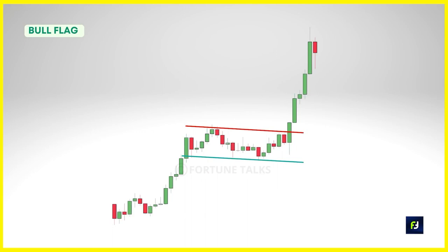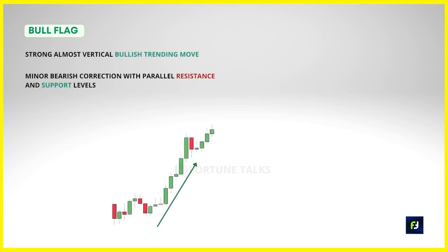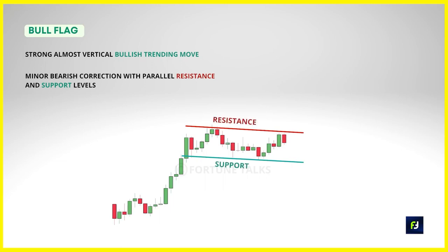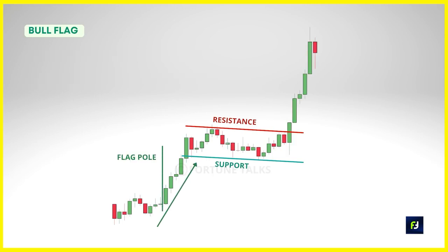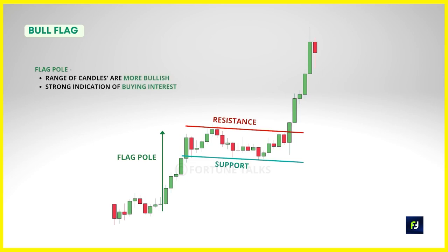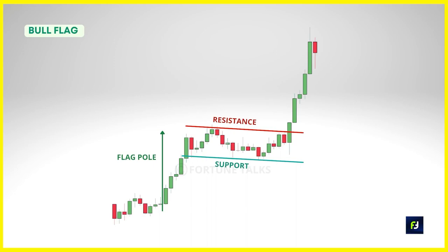The bullish flag or bull flag forms during a bullish trend. It starts with a strong, almost vertical bullish trending move which then stabilizes and turns into a minor bearish correction with parallel tops and bottoms representing support and resistance. To identify a bull flag, look for a preceding uptrend which makes a flagpole — the candles' range is more bullish than usual and they tend to close near the highs, indicating strong buying interest and that the bulls are dominating. After the strong move higher, the market takes a break in the form of a profit-booking pullback.